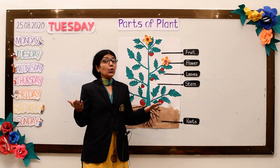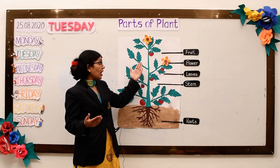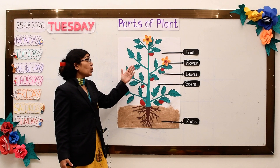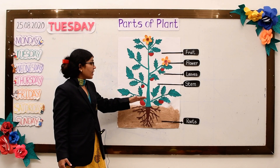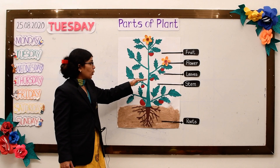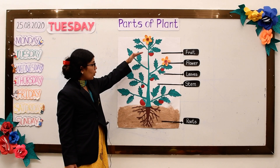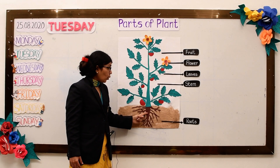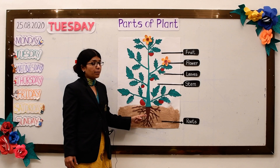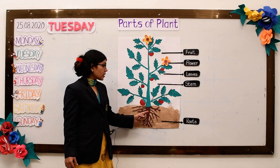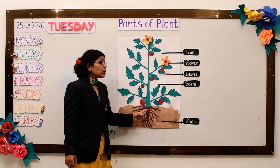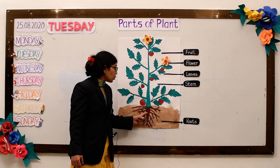Do you know the parts of plants that makes them grow and grow? The root that holds the plant in place — soak up food and water too.